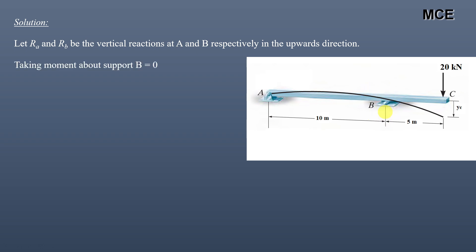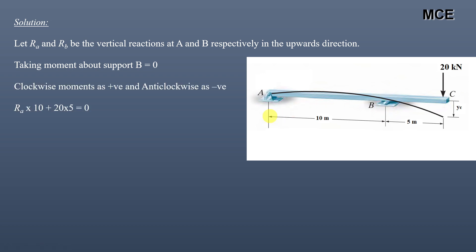Taking moments about support B, assuming clockwise moments are positive and anti-clockwise negative, the moment about B gives RA × 10 + 20 × 5 = 0. From this we get RA = −10 kN. Since we assumed RA in the upward direction but the sign is negative, it means RA actually acts in the downward direction.